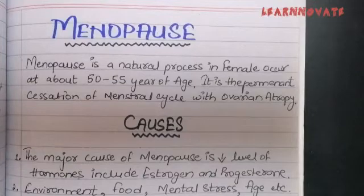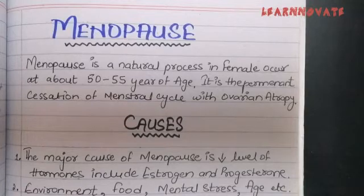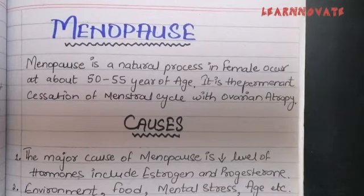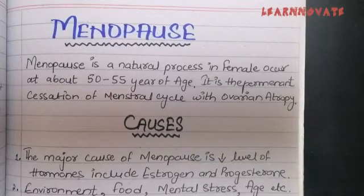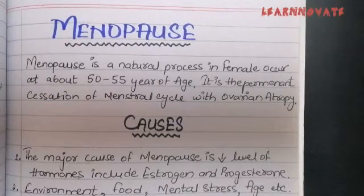Starting from the definition of menopause: menopause is a natural phenomenon that occurs in females at about 50 to 55 years of age. It is actually the permanent cessation of the menstrual cycle with ovarian atrophy, occurring on average at the age of 45 to 50 years.